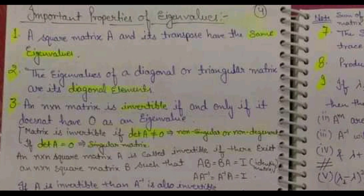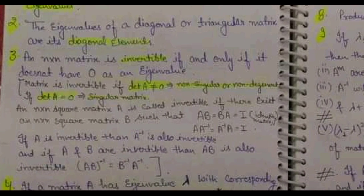Next we are going to talk about invertible matrices. An invertible matrix is a matrix which does not have any eigenvalue equal to zero. It is also known as a non-singular or non-degenerate matrix. If the determinant is equal to zero, we call it a singular matrix, but if the determinant is not equal to zero, we call it a non-singular matrix.